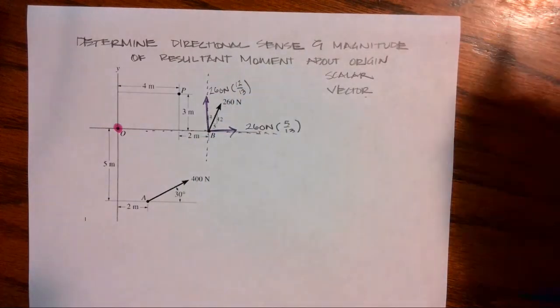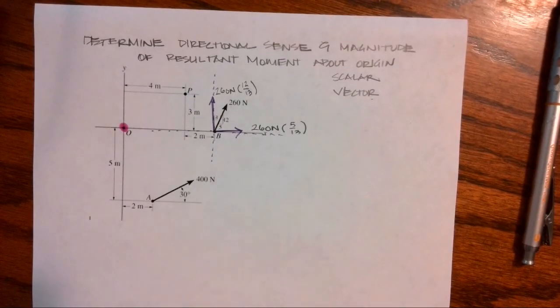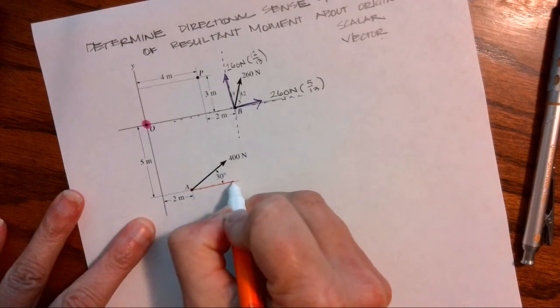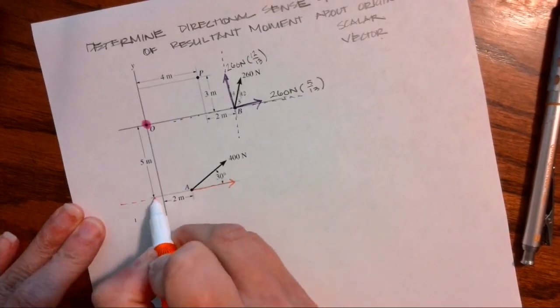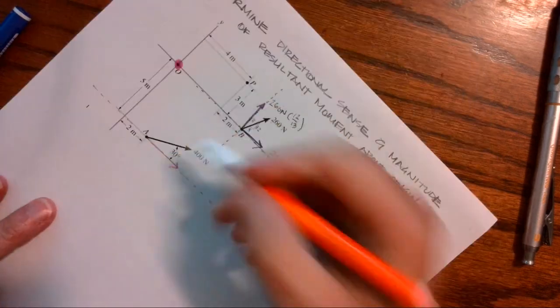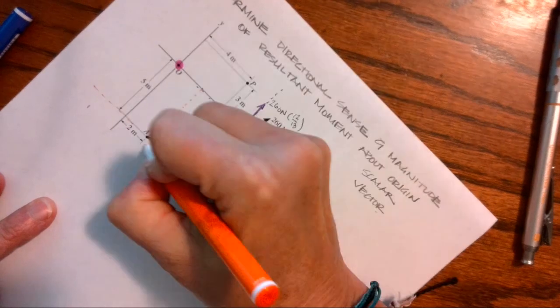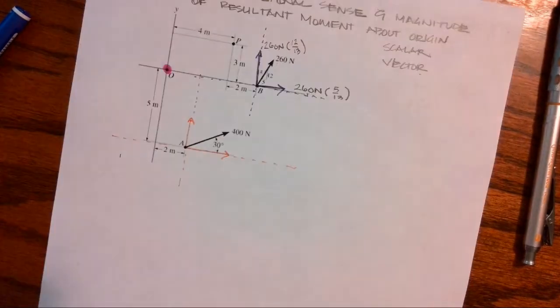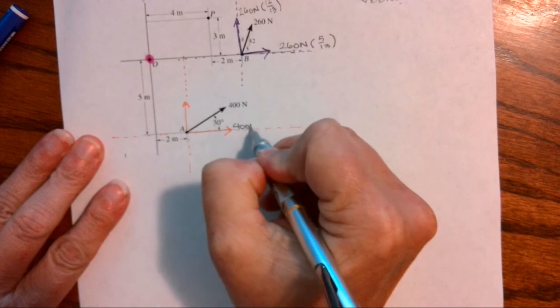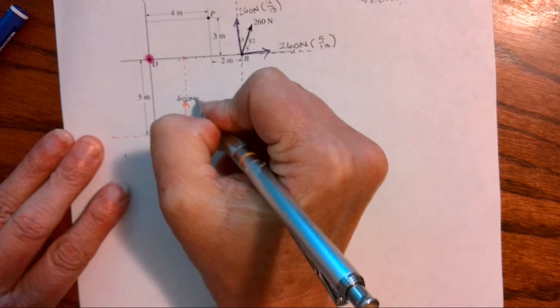So I'm going to do the same thing down here. I'll use a different color just so we can see what's going on. I have a 400 Newton vector. It has an X component going in the X direction, and again that's going all the way from infinity to infinity. And then I have a Y component, and again that Y component goes all the way from infinity to infinity. So I have 400 Newtons cosine 30 and 400 Newtons sine 30.